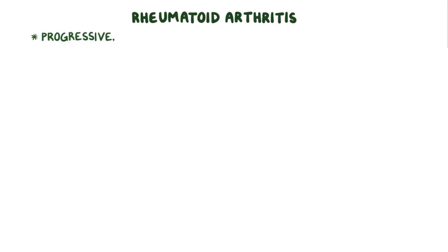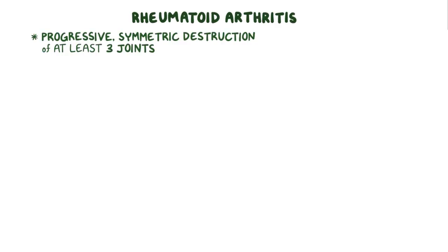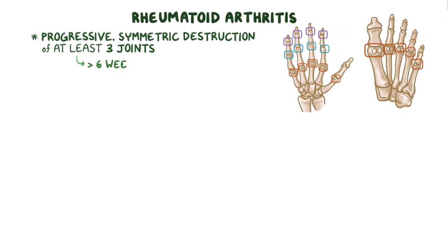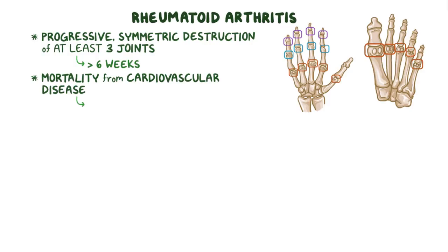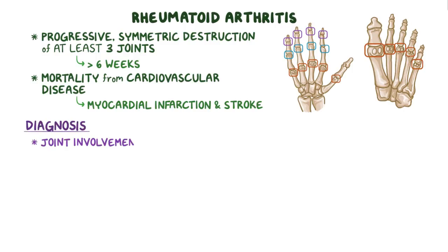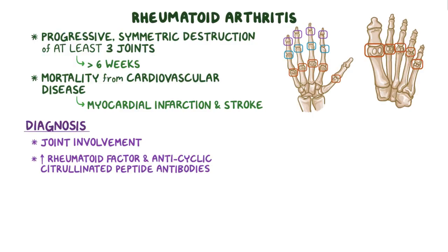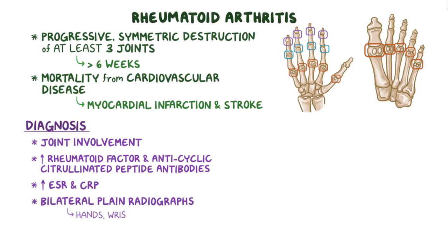As a quick recap, rheumatoid arthritis causes progressive, symmetric destruction of at least three joints, especially in the hands and feet, over more than six weeks. But the main mortality comes from cardiovascular disease, especially myocardial infarction and stroke. Diagnosis is generally based on joint involvement, having an elevated rheumatoid factor and anticyclic citrullinated peptide antibodies, and an elevated ESR and CRP. Bilateral plane radiographs of the hands, wrists, and feet are generally obtained during the initial evaluation, primarily as a baseline for monitoring disease progression.